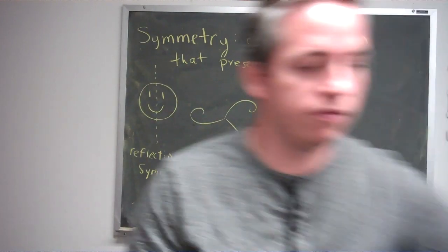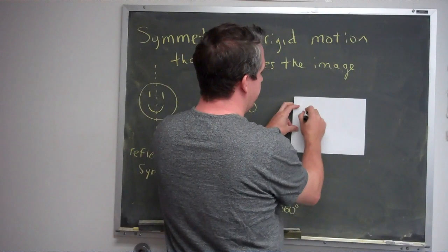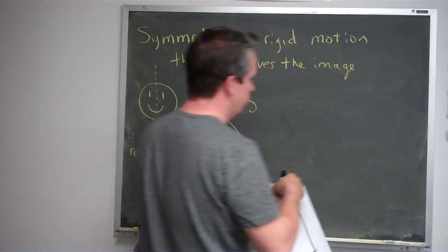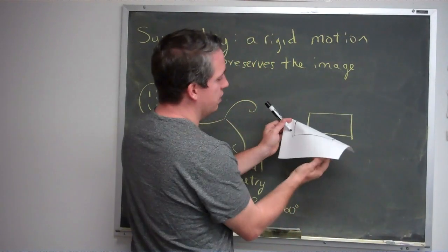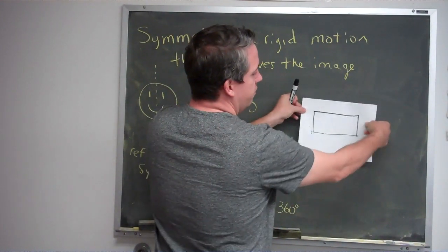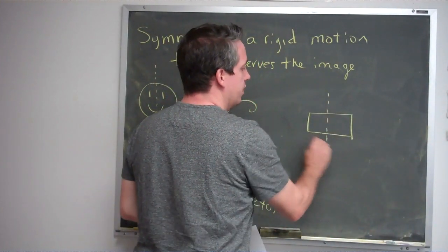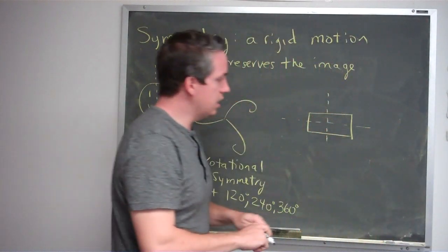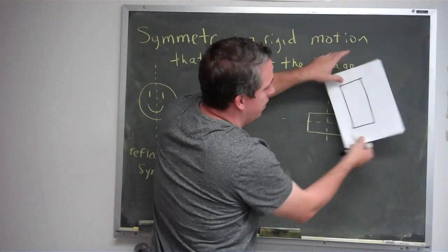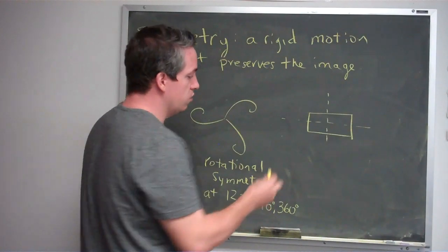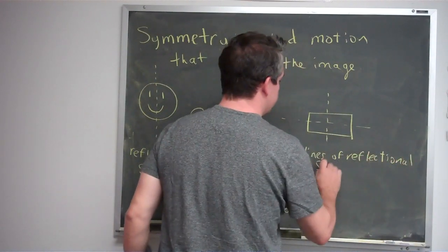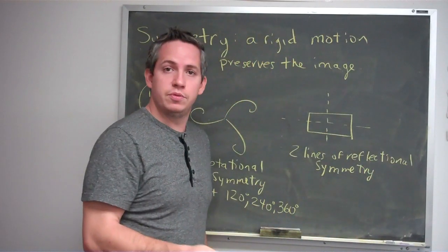There are other images that will have symmetry. Suppose I start with a rectangle. This rectangle has reflectional symmetry: if I flip it over the vertical line through the center, I get the same rectangle back, and if I flip it over the horizontal line through the center, I also get the same rectangle back. So there's a line of reflection vertically and one horizontally. In addition, if I rotate the rectangle 180 degrees, I get the same rectangle back, and then again at 360 degrees. So this has two lines of reflectional symmetry and rotational symmetry at 180 and 360 degrees.